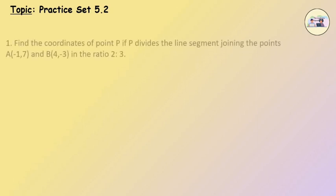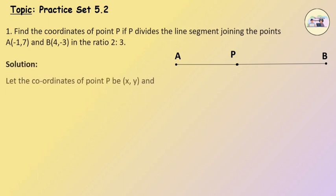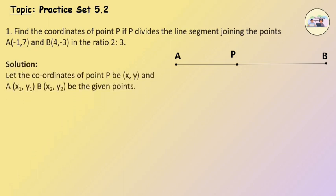Now let's solve some questions using the Section Formula from Practice Set 5.2. Question No. 1: Find the coordinates of point P if P divides the line segment joining the points A and B in the ratio 2 is to 3. Solution: Let the coordinates of point A be (x1, y1) and B be (x2, y2).